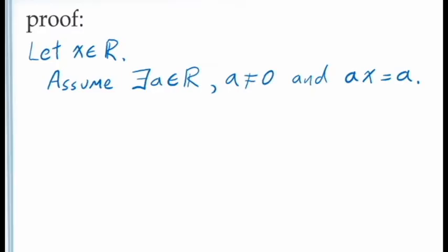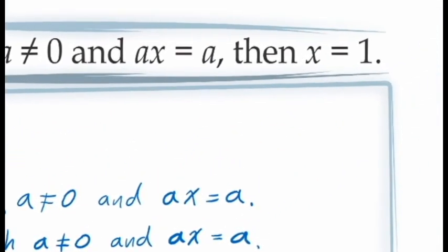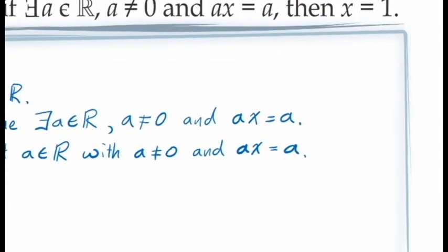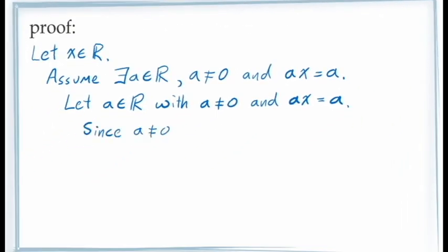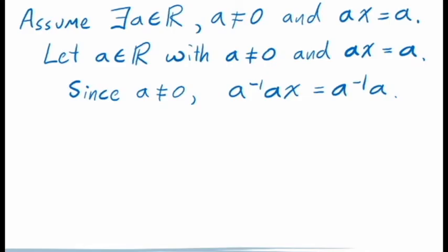Since we know a value of a exists with this property but we don't know what value of a exists, all we can do is introduce an unknown constant into our proof that represents the existing value. We do this by including a statement along the lines of: let a be an element of the real numbers for which a is not equal to 0 and a times x is equal to a. Remember, we cannot assign a value to a, because the value of a that exists is unknown. From this assumption, we're required to demonstrate that x is equal to 1. Starting with the equation a times x is equal to a, we can use the fact that since a is not 0, a has a multiplicative inverse. This means we can multiply the inverse of a on both sides of this equation, giving us a-inverse times ax is equal to a-inverse times a. Since a-inverse times a is 1, we get x is equal to 1, which is what we're trying to demonstrate.